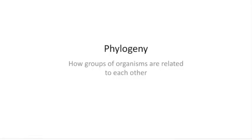Following the study of evolution, scientists use evolutionary information to sort organisms based on how closely they're related. That science is called phylogeny, and one of the tools used in phylogeny is called a cladogram, which basically looks like a family tree.